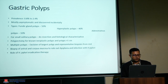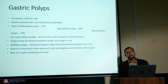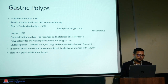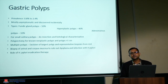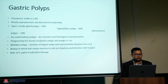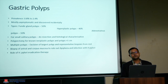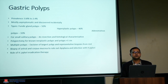H. pylori is a commensal bacteria in our stomach and is linked to gastric ulcers, dysplasia, GI malignancies, gastric lymphoma, and even these polyps. So we try to eradicate H. pylori as a treatment modality. We commonly use drugs like amoxicillin, metronidazole, clarithromycin, and bismuth substrate, together with the combination of PPIs.